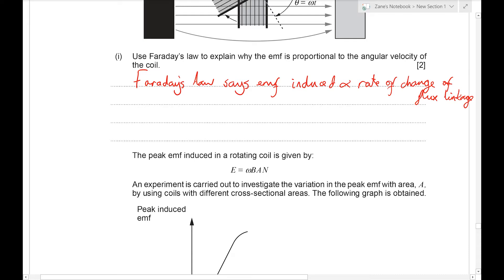Now we're going to show that the size of that induced EMF is proportional to the angular velocity of the coil. Now the best way of doing this, or the most convincing proof for me, is to use Faraday's law: E equals dNφ by dt.